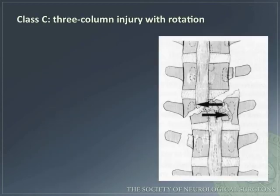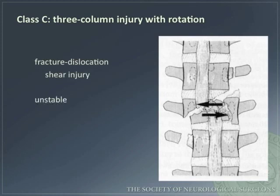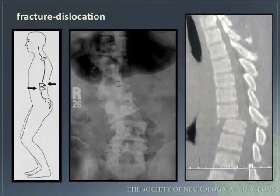Class C is a three-column injury with rotation — a fracture dislocation or shear injury. It is unstable and typically results in neurologic deficit. Here is a diagram and radiographic image demonstrating the mechanism of injury for fracture dislocation.